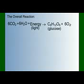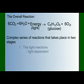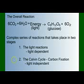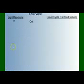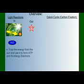So here's our overall chemical reaction for photosynthesis. But like we learned in our introduction to metabolism video, overall reactions don't tell the whole story. In fact, photosynthesis is a complex series of reactions that take place in two stages: the light-dependent reactions and the Calvin cycle or carbon fixation. In the light reactions, we take in light and water, which are used to trap energy from the sun to form ATP.